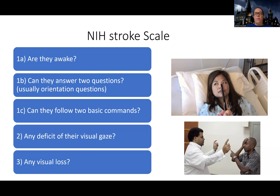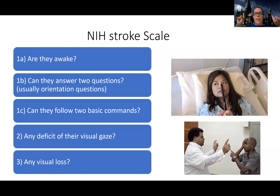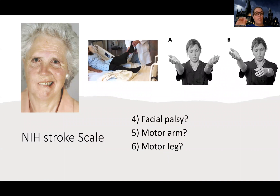Then we want them to follow two basic commands — like give me a thumbs up, raise your eyebrows, or stick out your tongue. After that, there are tests that look at visual gaze, where they have you follow a finger across to see if you have any eye movement difficulties, because you can have decreased motor movement in your eyes after a stroke. They also look for any visual loss — they'll cover one eye and move fingers into the visual field asking which side, to check for visual field deficits.